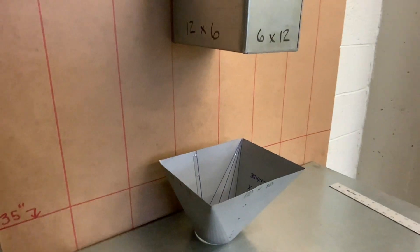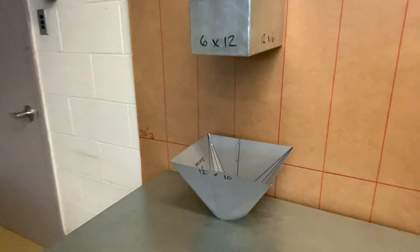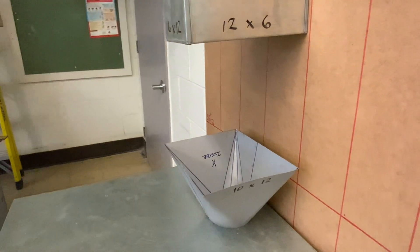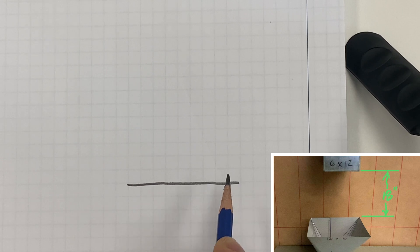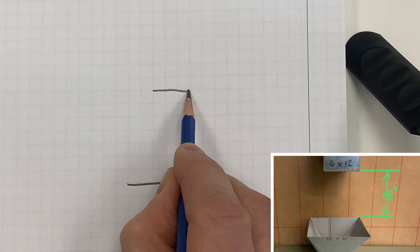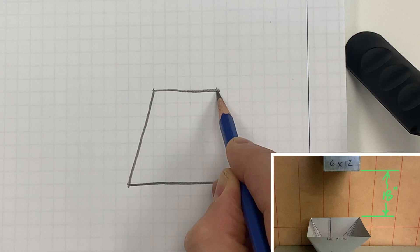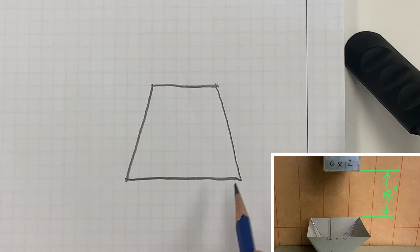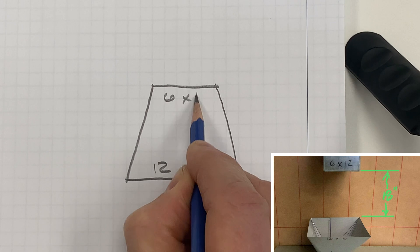Third scenario: a 12 by 10 to 6 by 12, 18 inches tall. So start by drawing a trapezoid, something that's equally tapering. Put in the dimensions: 12 by 10 on the bottom and 6 by 12.